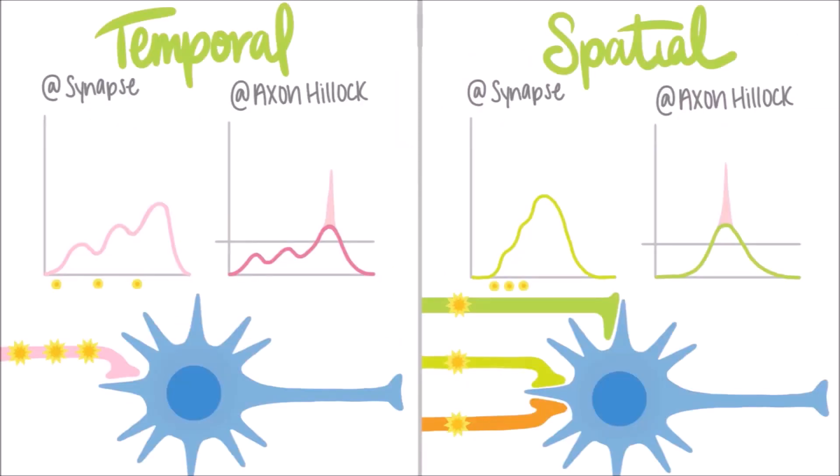So here is a comparison between these two types of summation. You can see how temporal summation involves several successive action potentials in a single presynaptic neuron.